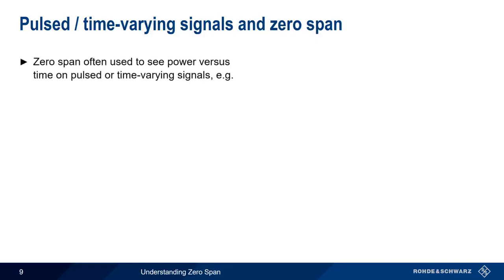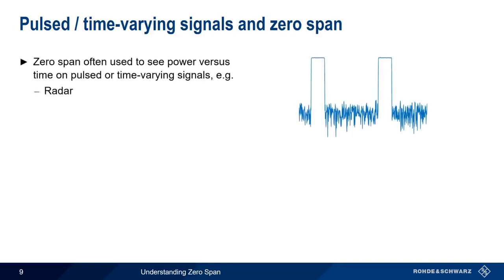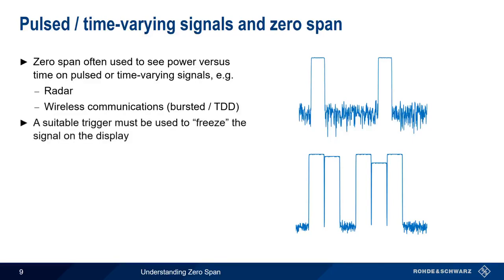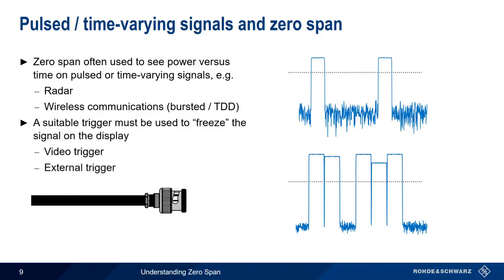Measurements of power versus time are frequently used for pulse signals, such as those found in radar, or for other time-varying signals such as the bursted or time-division duplex signals used in some wireless communication standards. Zero-Span allows us to see power over time, or to observe the envelope of the signal. In almost all cases, some type of trigger must be defined to get a stable signal or to freeze the time-varying signal on the screen. The most common way to trigger in Zero-Span mode is using a video trigger, which defines a level that, when crossed, causes the instrument to trigger. Another common method is using an externally supplied trigger signal.